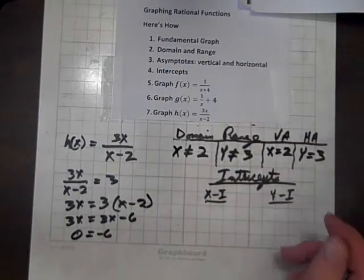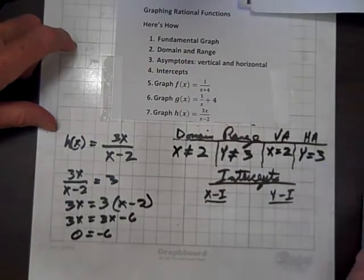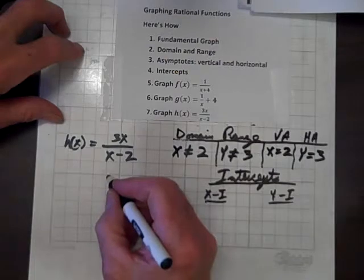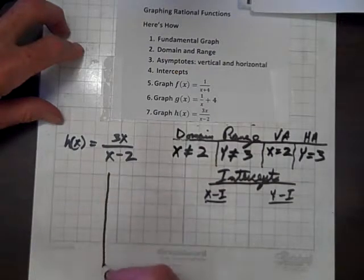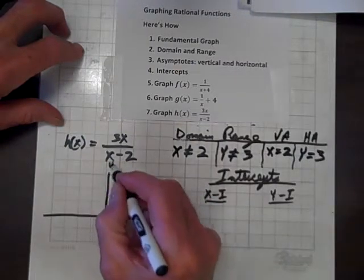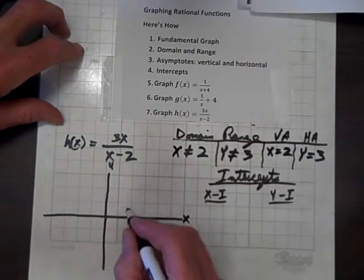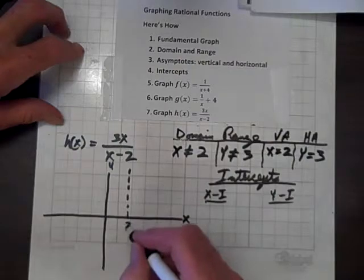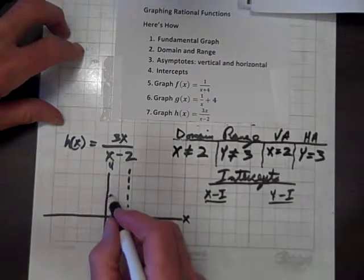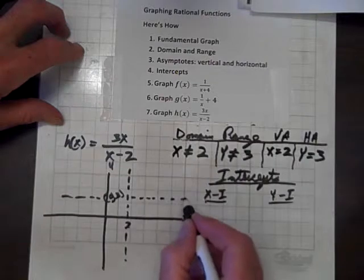Our range is all reals except 3, and our horizontal asymptote occurs at y equals 3. So now let's graph the function. We've got both a horizontal and a vertical shift. So we're going over 2, and there's our vertical asymptote. And we're going up 3, and there's our horizontal asymptote.